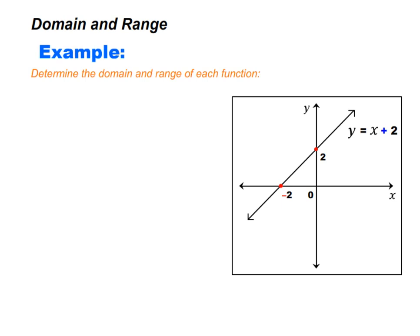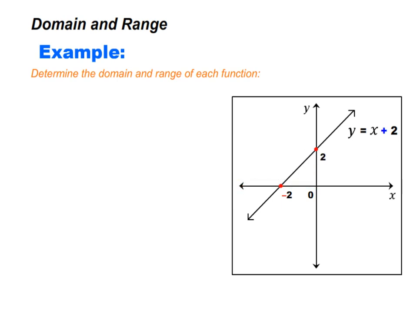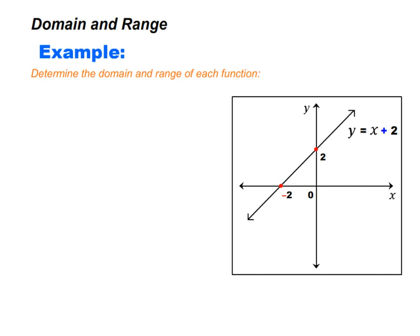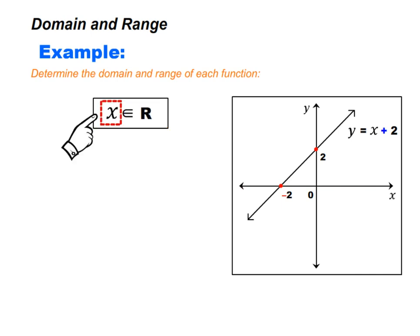Let us look at another example where we want to determine the domain and range of each function. For the first graph, look at the horizontal axis — the graph uses all x values, both positive and negative. We can therefore say the domain is x is an element of real numbers, which means x is any real number.